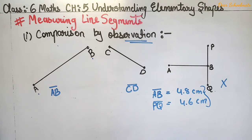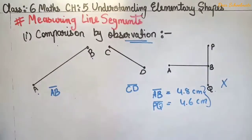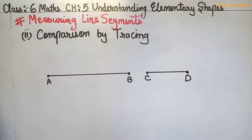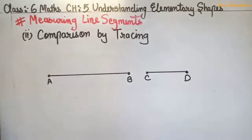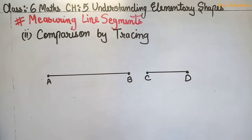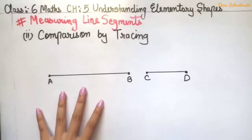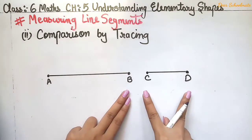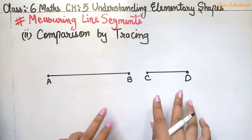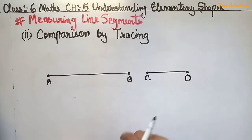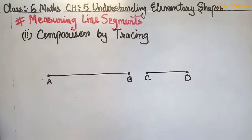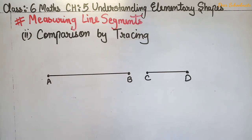Now let's see the second method of measuring a line segment. The second method is comparison by tracing. We use tracing paper to trace and compare which line segment is bigger and which is smaller. Here we have two line segments, AB and CD, and we will identify which is larger by tracing.